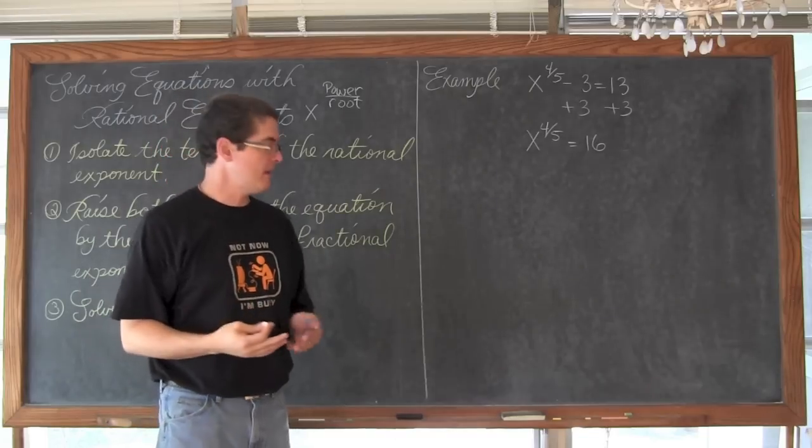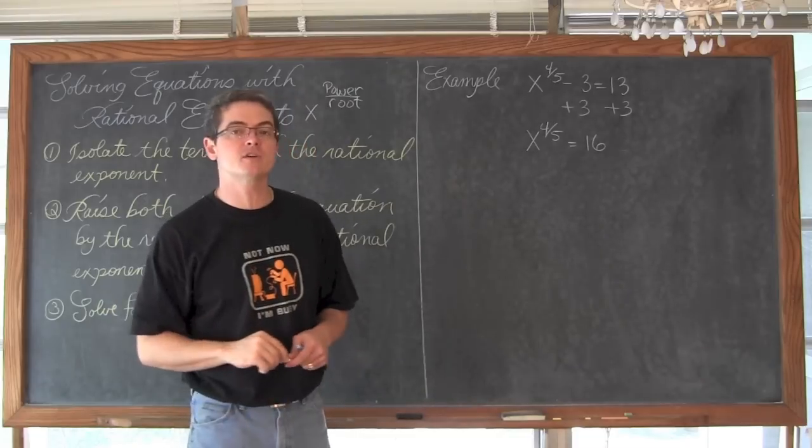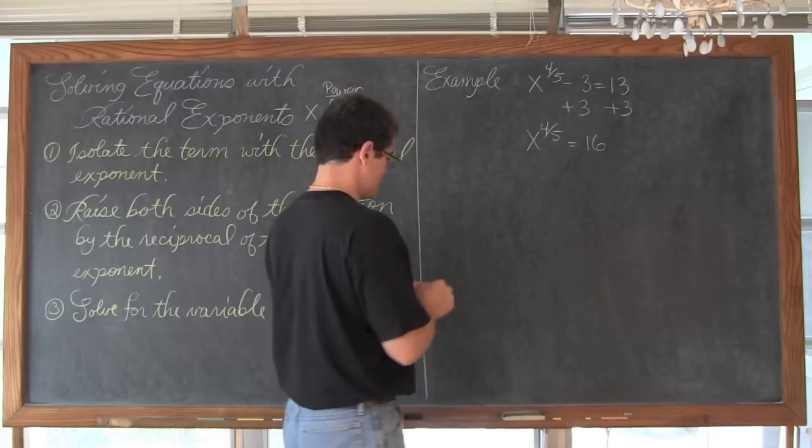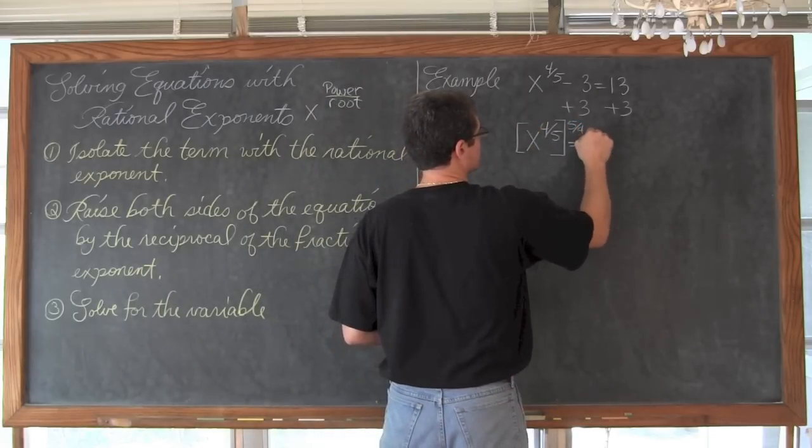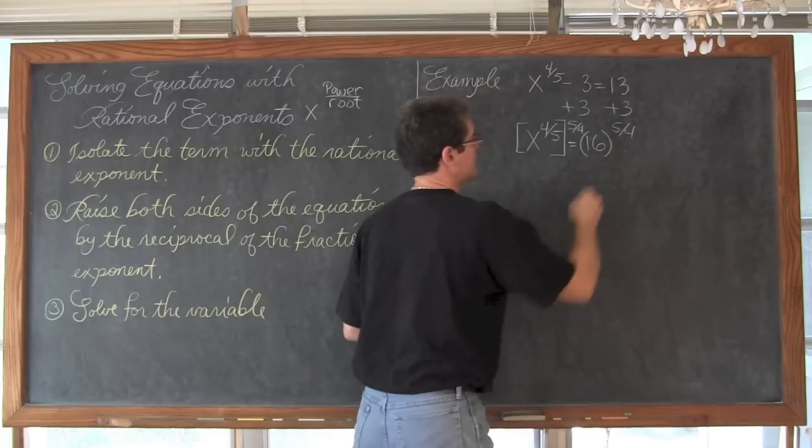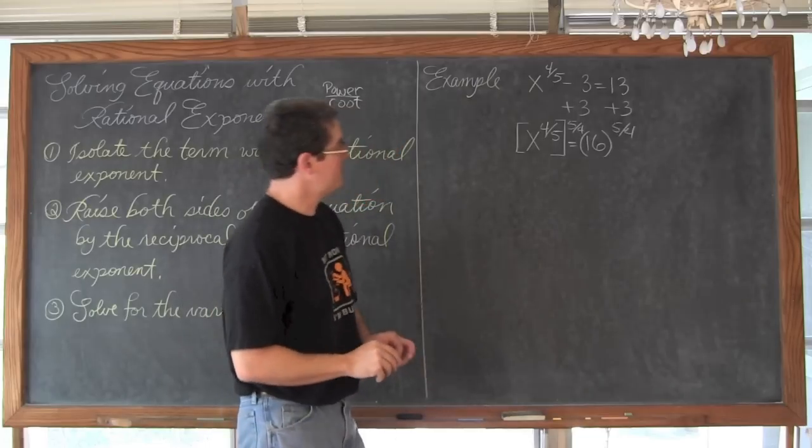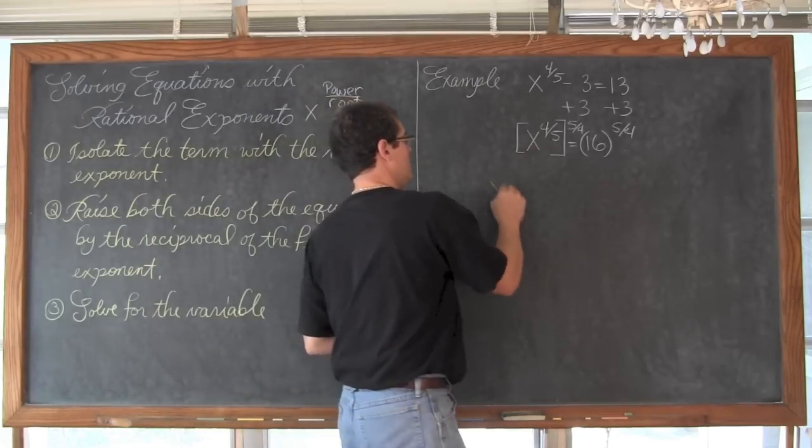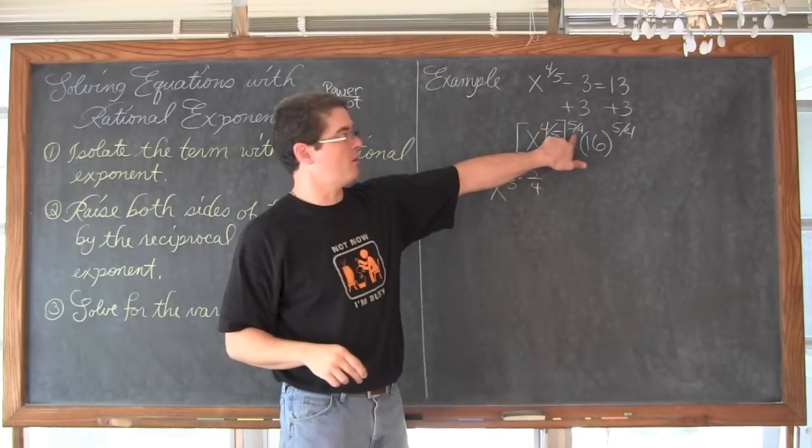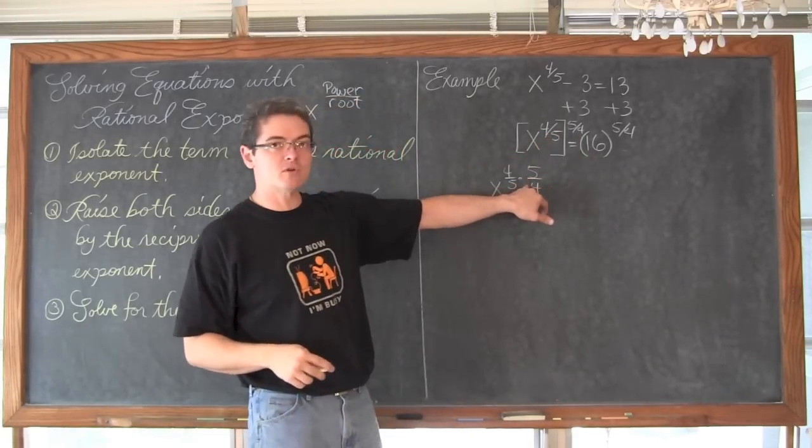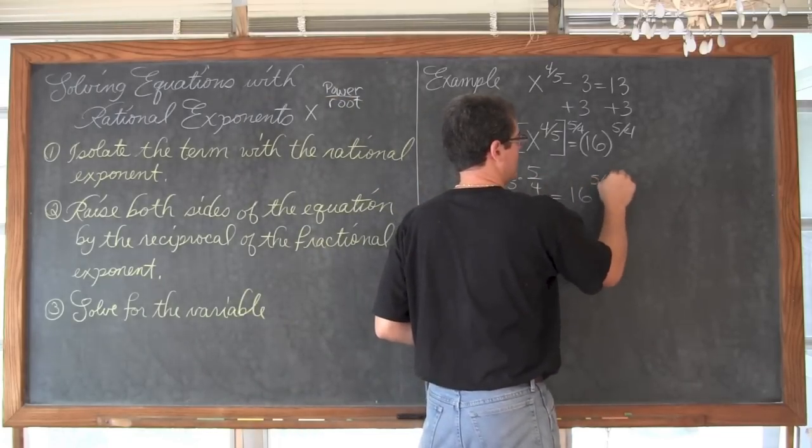Now we are going to, as the directions say, raise both sides of the equation by the reciprocal of that fractional or rational exponent. So we are going to raise both sides of this equation by five-fourths. We are going to have x to the four-fifths times five-fourths. Remember this is power-to-power rule. When you have stacked exponents you do want to multiply them. That is equal to 16 to the five-fourths power.